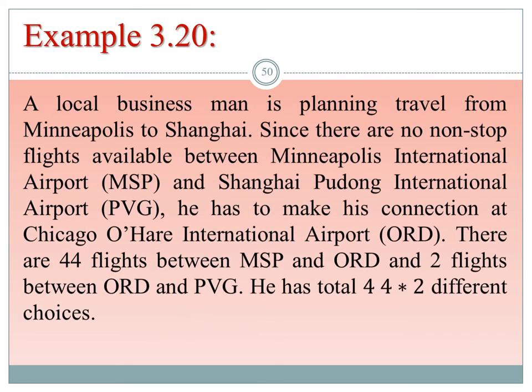Simple example of the counting principle: there are three airports — MSP, PBG, and ORD. There are 44 flights between MSP and ORD and 2 flights between ORD and PBG. By the multiplication principle, there are 44 × 2 = 88 different ways to travel from MSP to PBG.